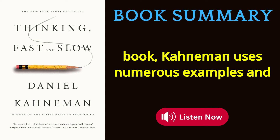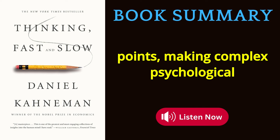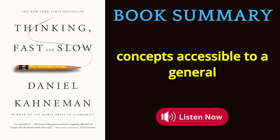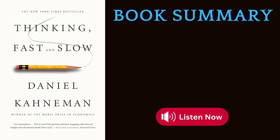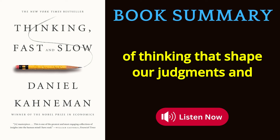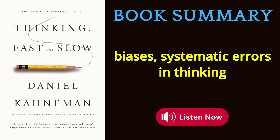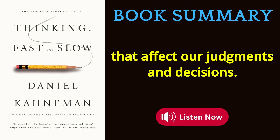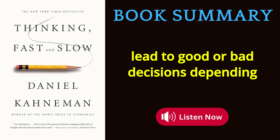Throughout the book, Kahneman uses numerous examples and thought experiments to illustrate his points, making complex psychological concepts accessible to a general audience. Key Concepts: 1. System 1 and System 2 — the two modes of thinking that shape our judgments and decisions. 2. Cognitive biases — systematic errors in thinking that affect our judgments and decisions. 3. Heuristics — mental shortcuts that can lead to good or bad decisions depending on the context.